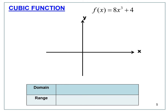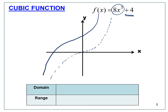For f(x) = 8x³ + 4, you draw the basic cubic graph and then shift it 4 units up. The domain is all real numbers — all x are always defined.